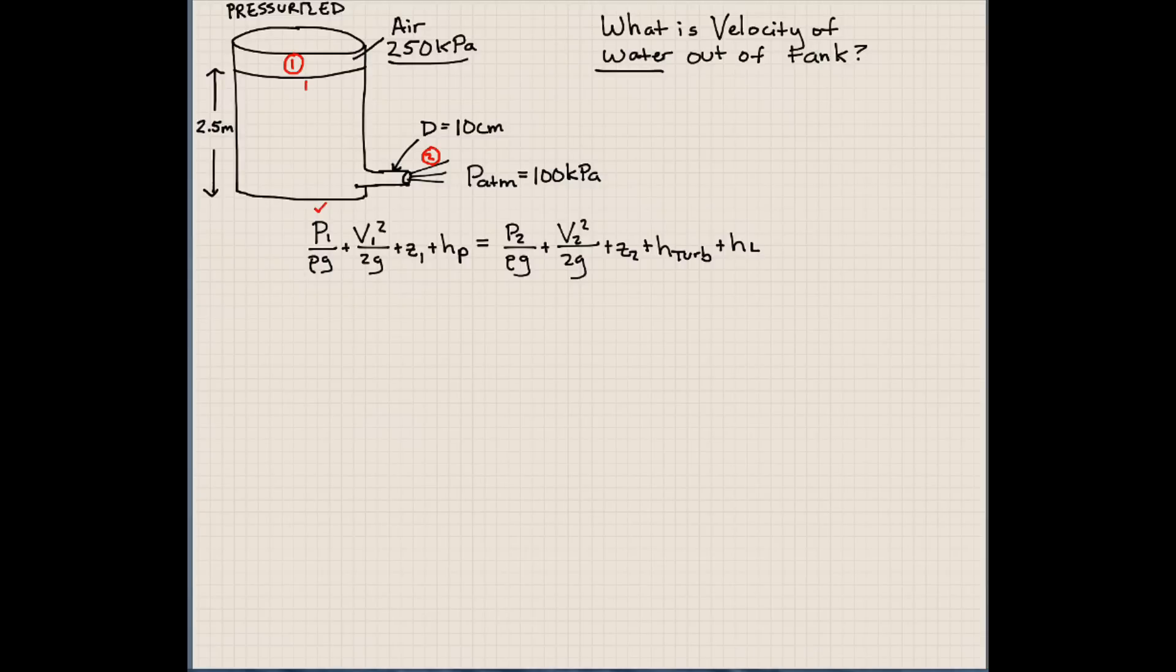So at point 1, we can say that the velocity is approximately 0. We know that it's going down. We know that this is moving down with time. But we're going to say that the velocity of 1 is much less than the velocity at point 2. So therefore, we're going to say that the velocity at 1 is approximately 0. And that makes our analysis a lot easier. And it doesn't sacrifice much accuracy as far as the final answer is concerned.